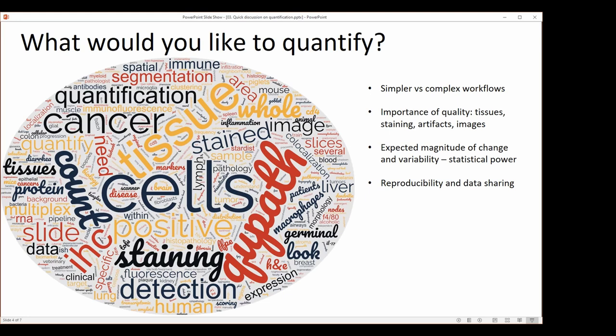How much information you can pull out of your tissue and what kind of fine details you can differentiate depends on the quality of your tissue, the staining, whether or not you have artifacts, and the overall quality of the images — whether or not they're in focus, whether or not they're saturated, and things like that.